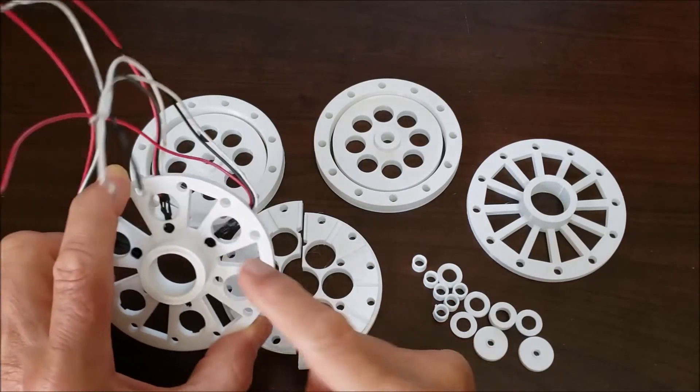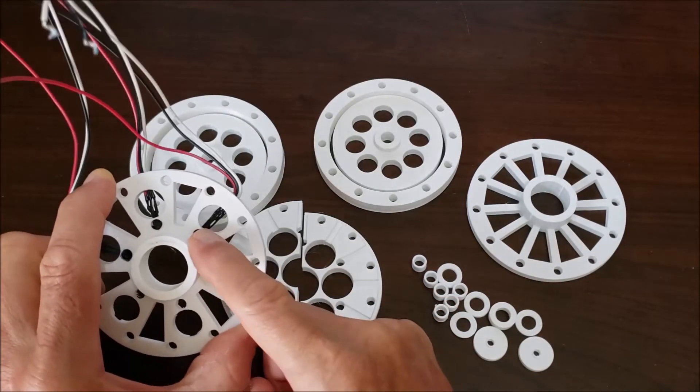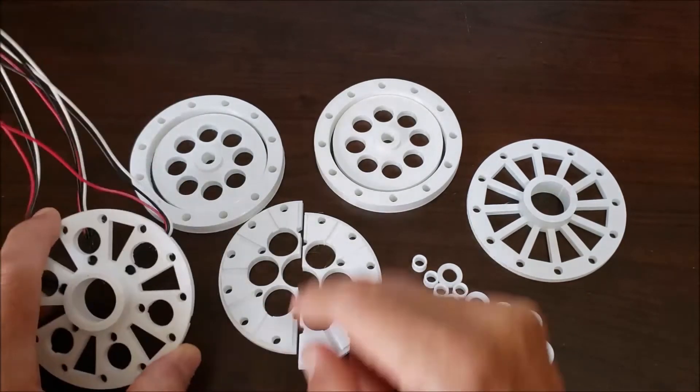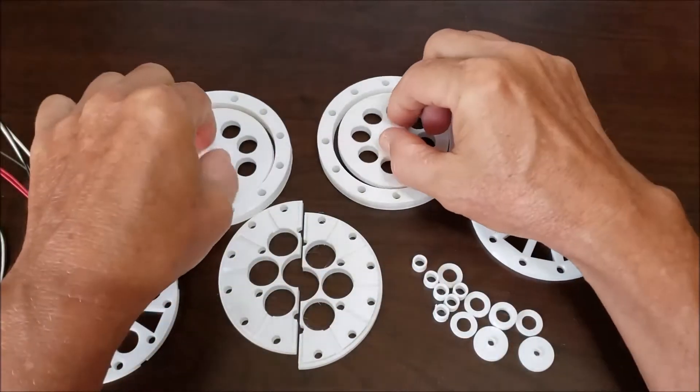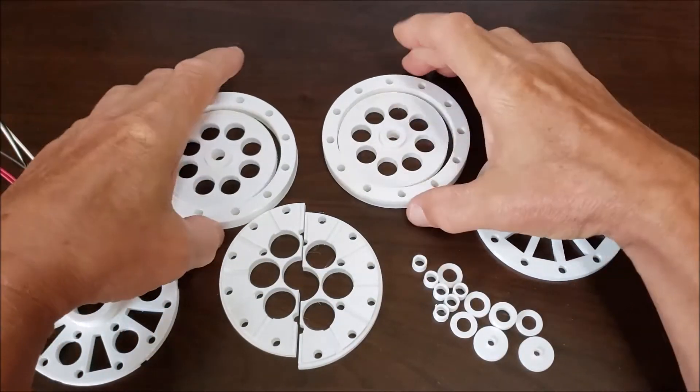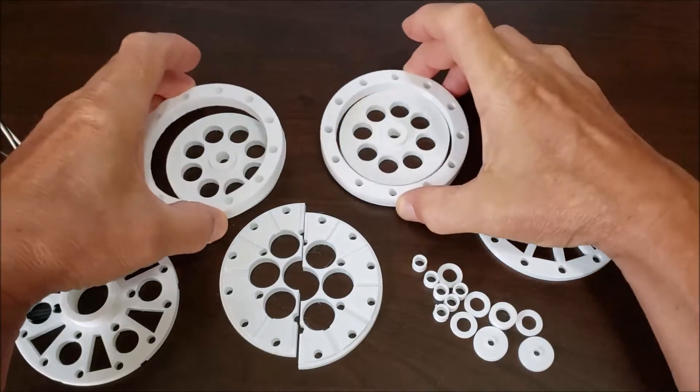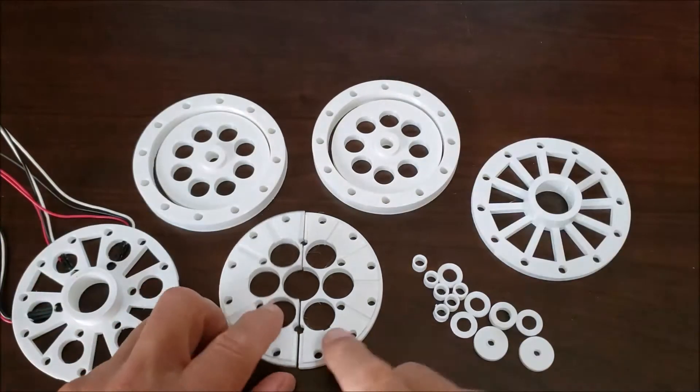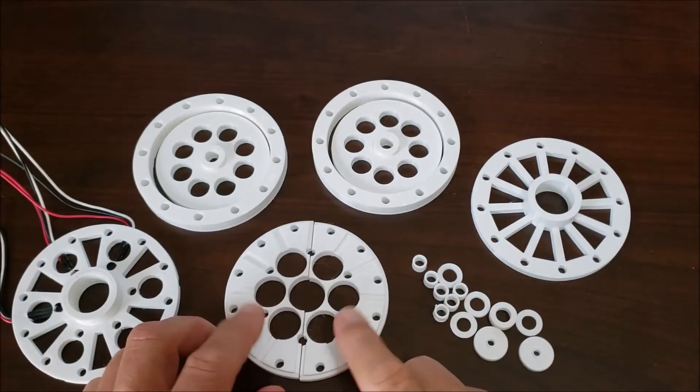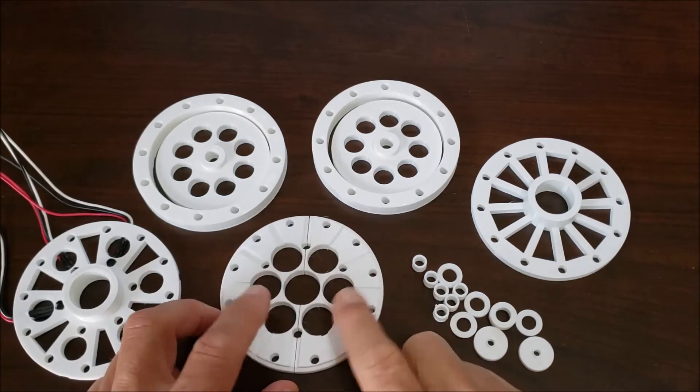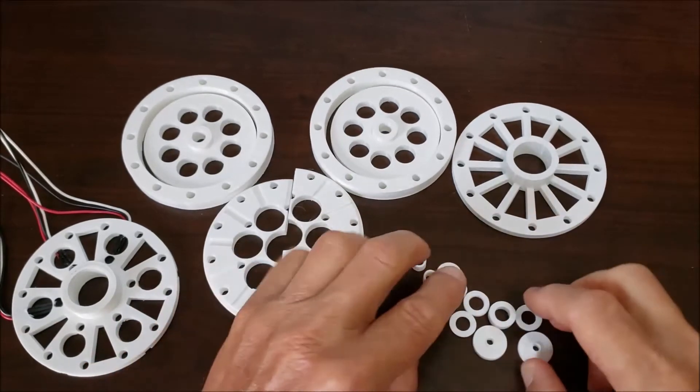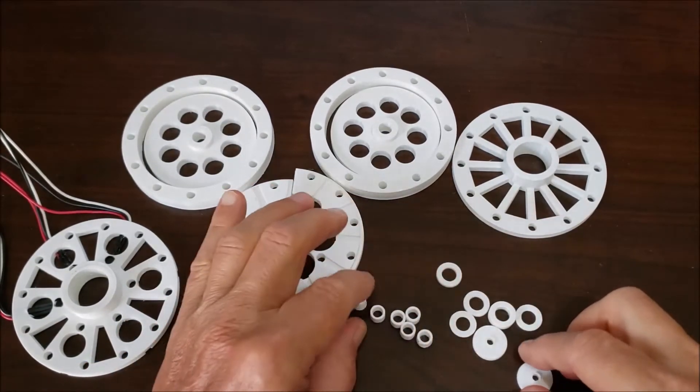This one has a place for the halls and a bearing, and two rotors, two rotor covers, stator - two pieces to the stator - and then these little pieces. This is the bobbin, this is what the coil gets wound on.